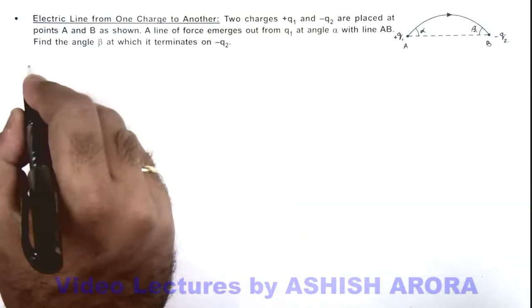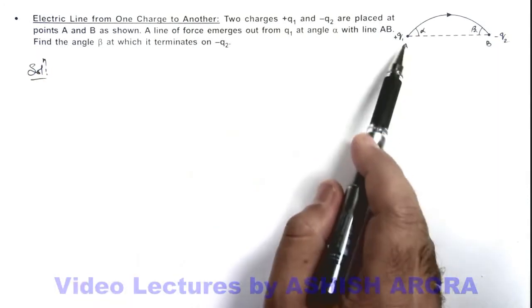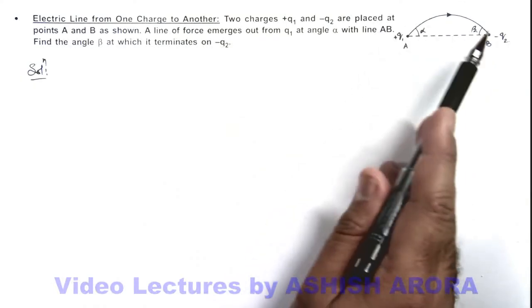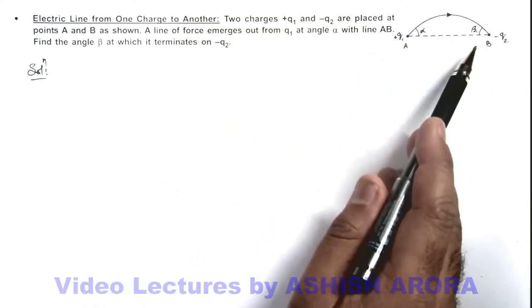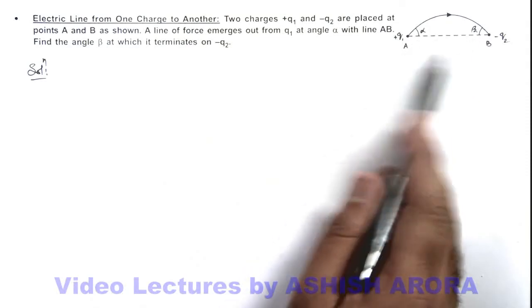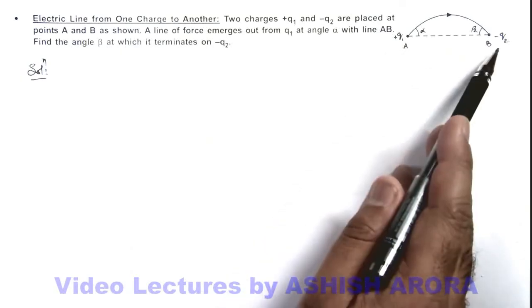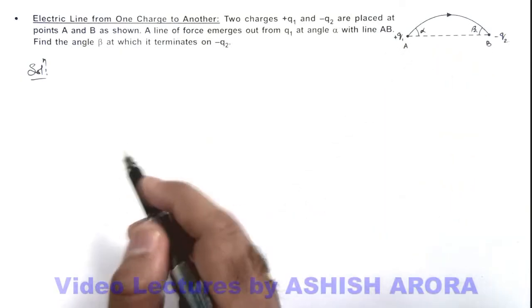We know well that if these two charges are of equal magnitudes, the configuration of lines from one charge to another will be symmetrical, and both the angles would have been equal. But here as q1 and q2 are not of same magnitude, we'll analyze the situation again.